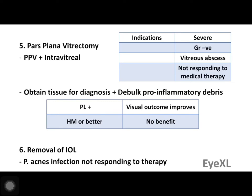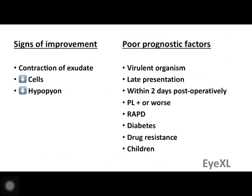The intraocular lens is removed only in one condition: Propionibacterium acnes infection not responding to regular therapy. Signs of improvement to look for include contraction of exudate, decrease in anterior chamber cells, and decrease in hypopyon. Poor prognostic factors include a virulent organism, late presentation, vision of perception of light or worse within two post-operative days, relative afferent pupillary defect indicating optic nerve involvement, diabetes, drug resistance, and children — who show a more virulent response possibly due to a hyperactive immune system.